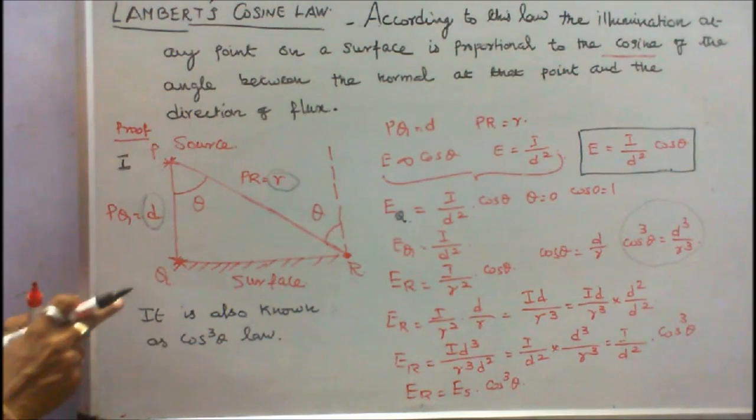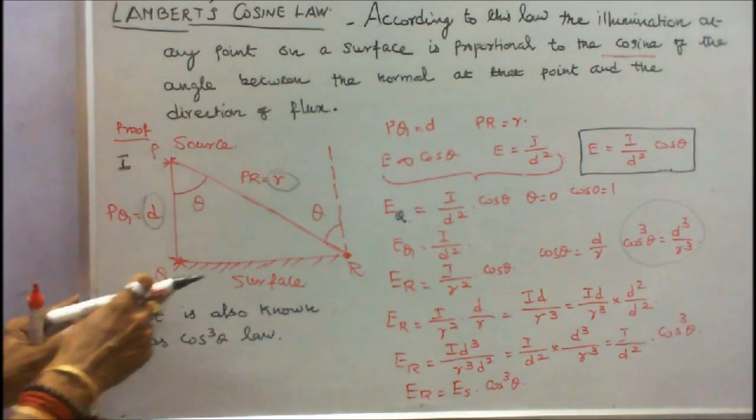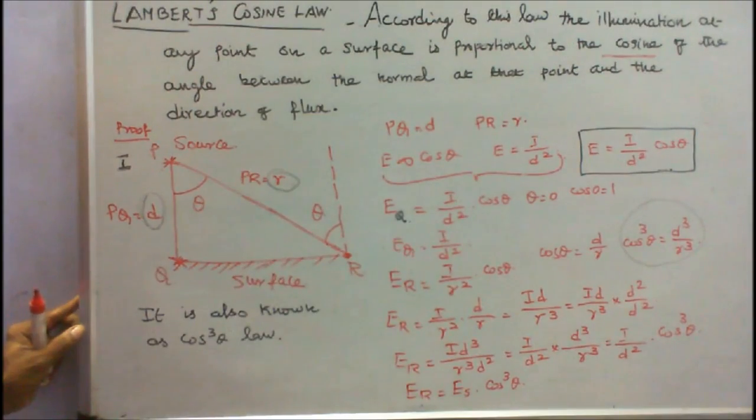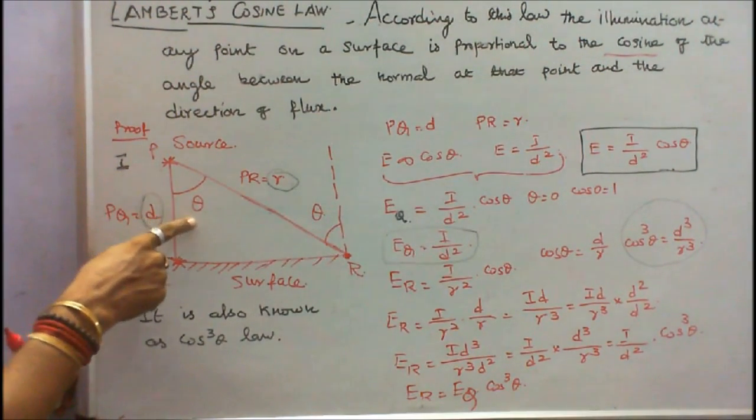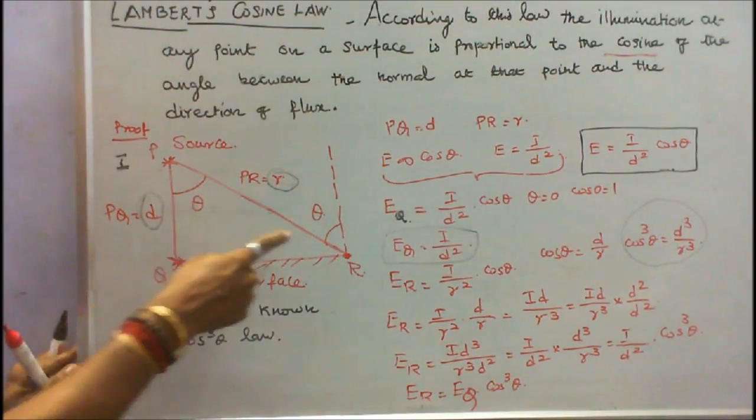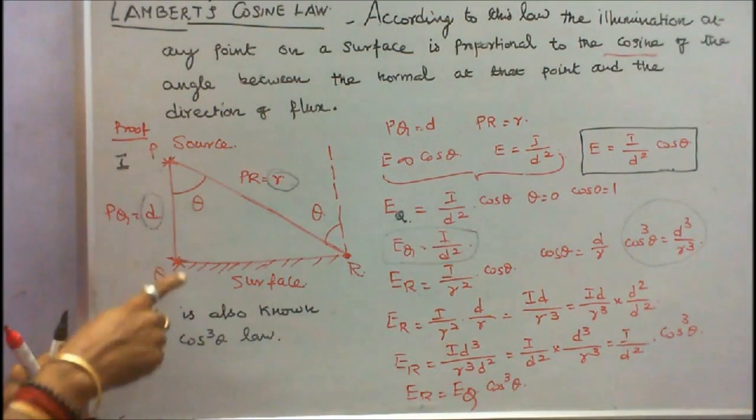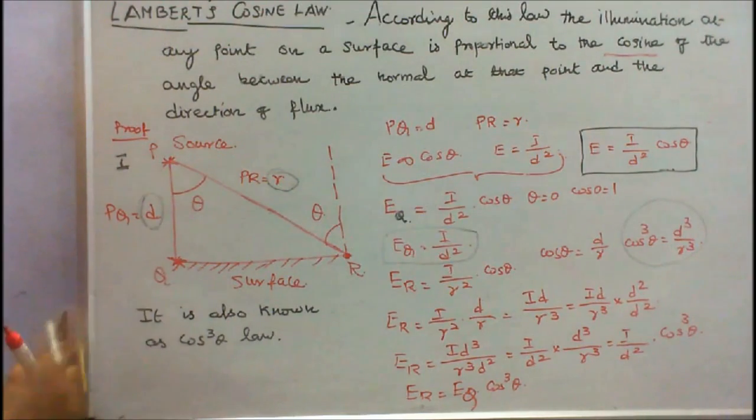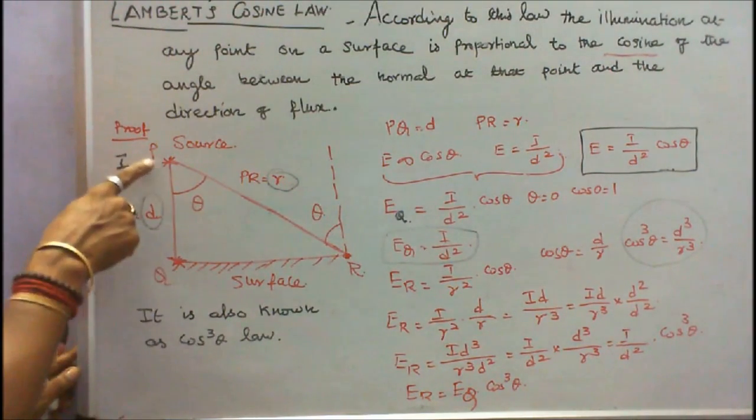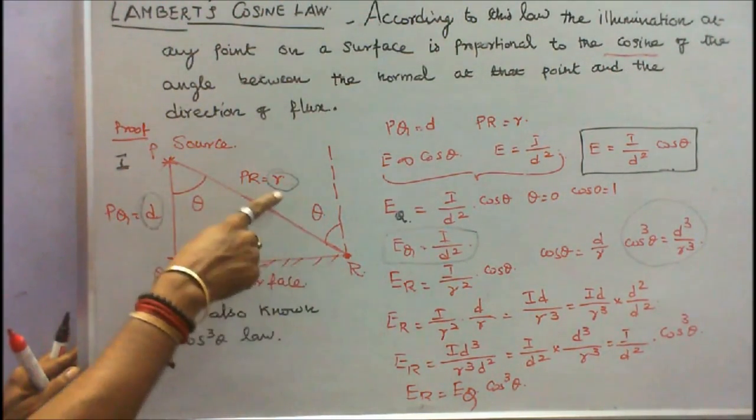I want to find the illumination at the point Q as well as the point R. Here the angle is theta. Therefore here this angle is also theta. The distance between P and Q is equal to small d. Distance between P and R is equal to small r.